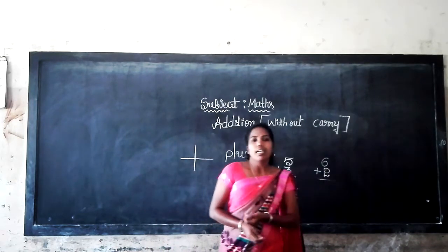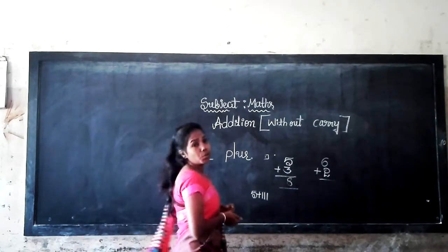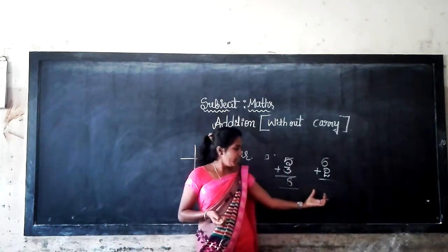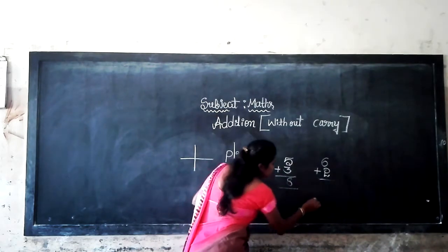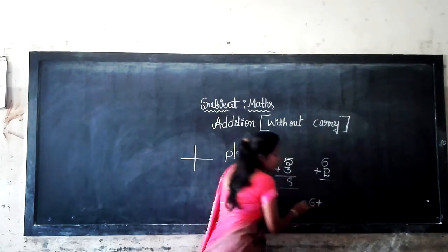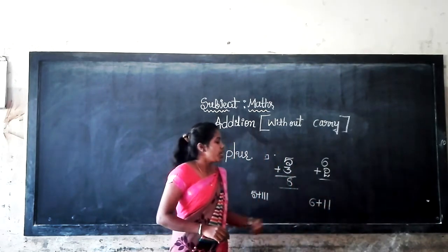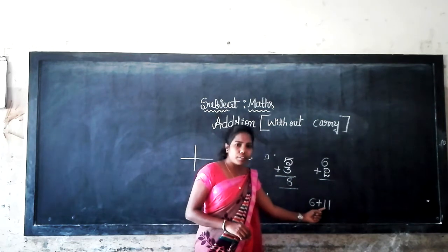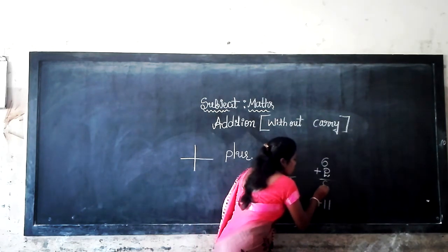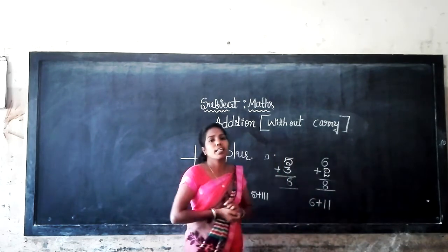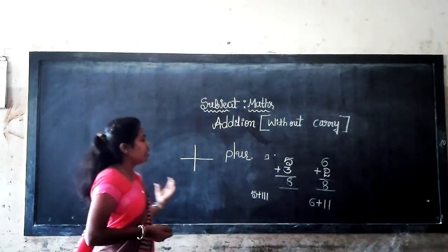Shall we go to the next example? It is 6 plus 2. Do you know the sum of 6 plus 2? So 6 plus, now you have 2: 1, 2. Count from 6 — 6, 7, 8. So 6 plus 2 is equal to 8. I hope you understand.